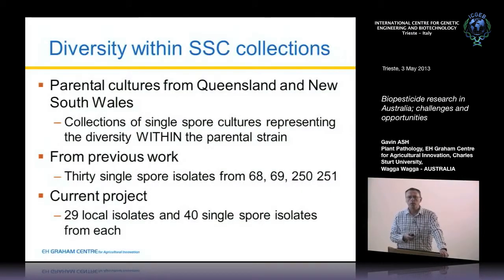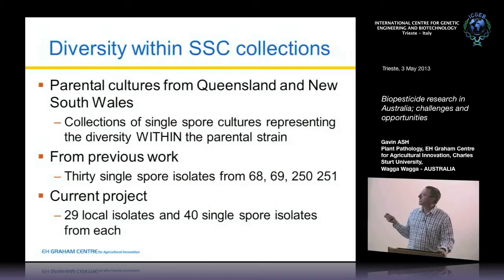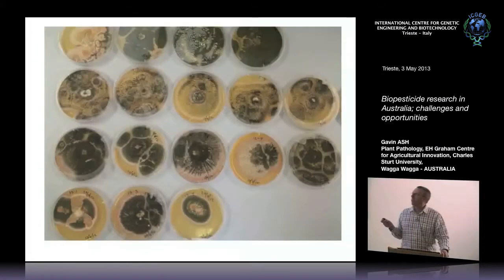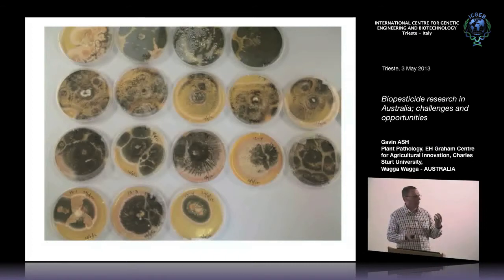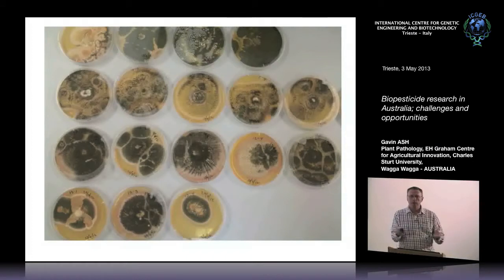We also wanted to look at the diversity of our cultures — how diverse are these single spore isolates? How much genetic material do we have to work with? We had our previous isolates 68, 69, 250, 251, plus another 29 local isolates from soil. You can see the type of genetic diversity just from the phenotype — there's a lot of variation that occurs within the fungus. This is one of the reasons why we go to single spore isolates: we want to know what the fungus is doing, produce it in a reliable production system, and know it works in the field. If there's a lot of variation, this can be a problem.